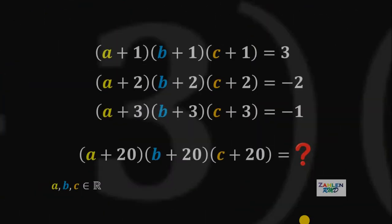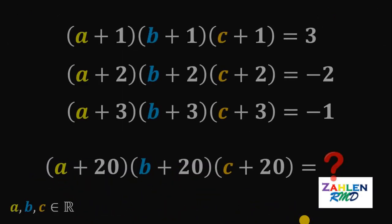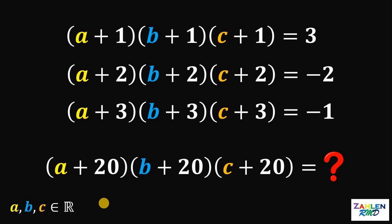Good day everyone. Here's our math challenge for today. Solve for the value of (a+20)(b+20)(c+20), given that (a+1)(b+1)(c+1) equals 3, (a+2)(b+2)(c+2) equals negative 2, and (a+3)(b+3)(c+3) equals negative 1, where a, b, and c are all real numbers. If you want to try this question, you can pause this video anytime, so you can try it first. And if you get the answer, please consider this suggested solution.